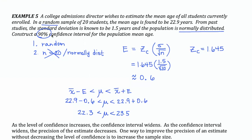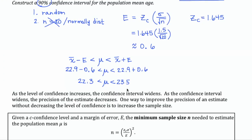So that's my 90% confidence interval for the population mean age. In other words, I can be 90% confident that the population mean will be a number between 22.3 and 23.5. Now, obviously we want to be as close to 100% certain as we can. But as you increase your level of confidence — from 90% to 95% to 99% — your confidence interval is going to widen. These values are going to spread apart, because if I want to be 99% certain, I have to cast a wider net to make sure I've caught the statistic I'm interested in.